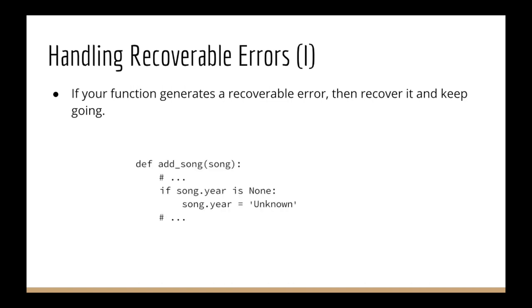Here's an example: a function that adds a song to a database. The caller provided a song with lots of data but there's no year. You can say: year is missing, I'll set it to 'unknown' and keep going. Very simple, very readable code. No problems — you just keep going.